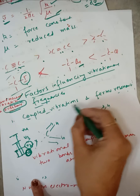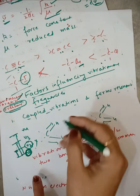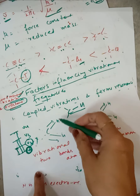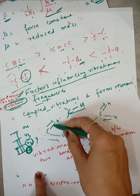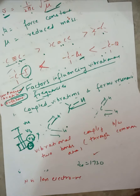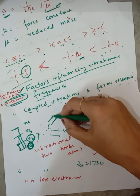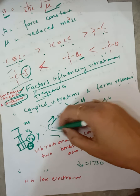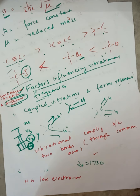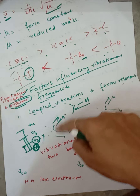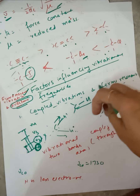Now coming to coupled vibration and Fermi resonance. If we take a methylene group, there are two CH bonds and we will get two frequencies — one for symmetric stretch and one for asymmetric stretch. Both are CH bonds, but we have two frequencies because these vibrations have been coupled. These are called coupled vibrations.